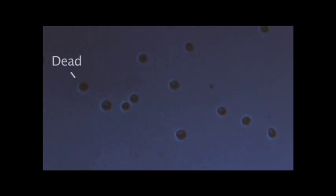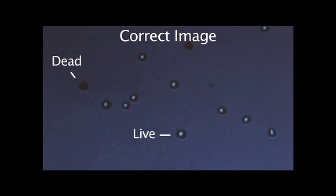In this image, the dead cells are a uniform blue. However, the live cells also appear uniform and do not have distinct bright centers and may not be correctly counted. This image is correctly adjusted.